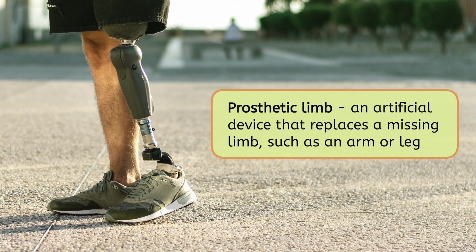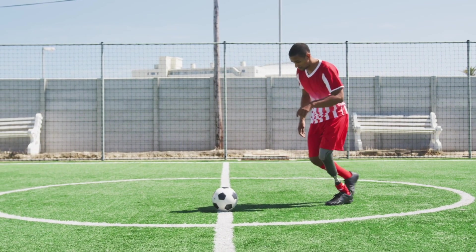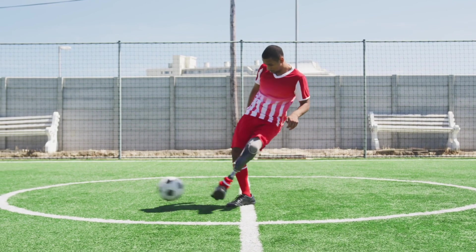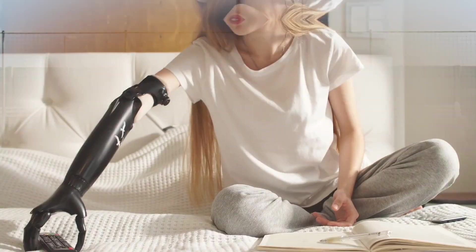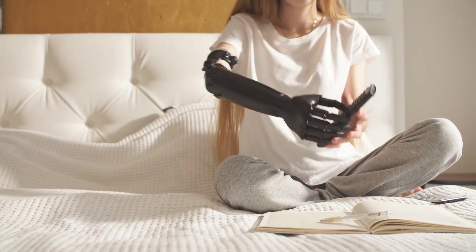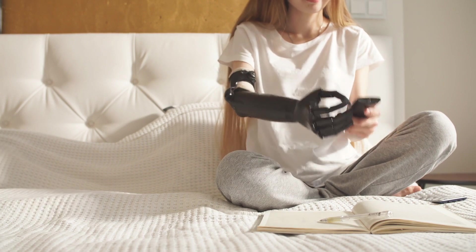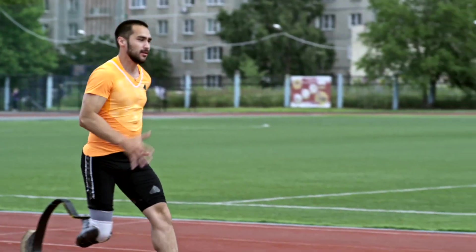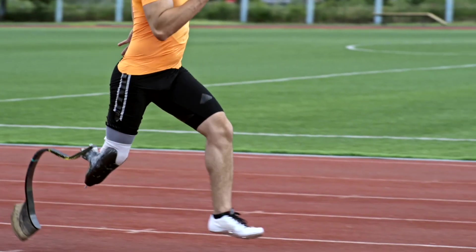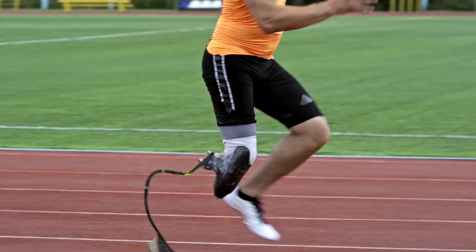How do you think prosthetic limbs can change the lives of people with limb differences? Prosthetic legs can help people walk, run, and even climb stairs. Prosthetic arms and hands can enable users to hold objects, write, and open doors.